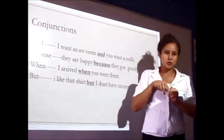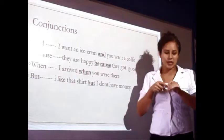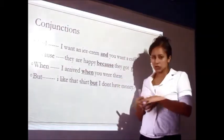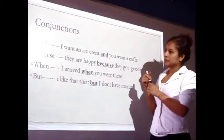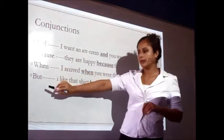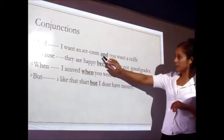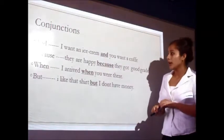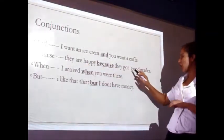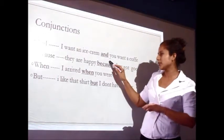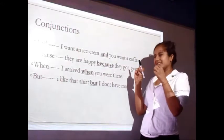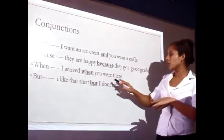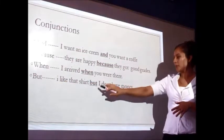Another part of speech are conjunctions. Conjunctions are words that we use to join or make connections between two events. Examples include: and, because, when, and but. For example: 'I want an ice cream and you want a cup' — 'and' connects the two situations. 'They are happy because they got a treat' — 'because' joins the two events.